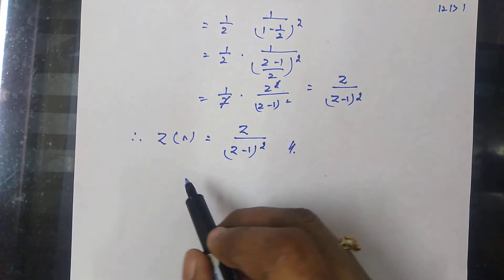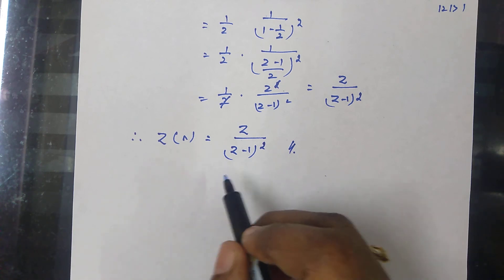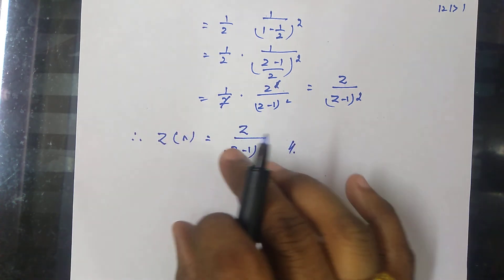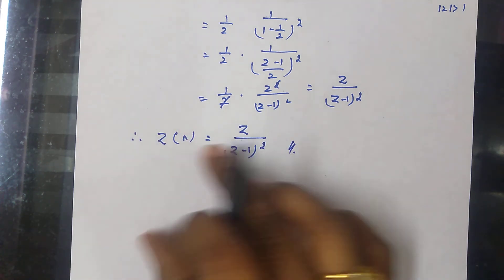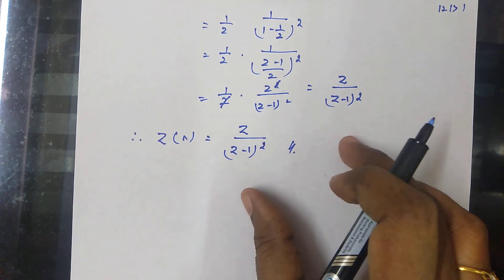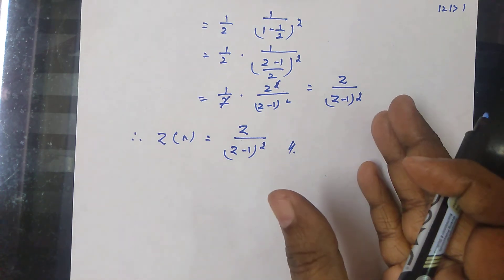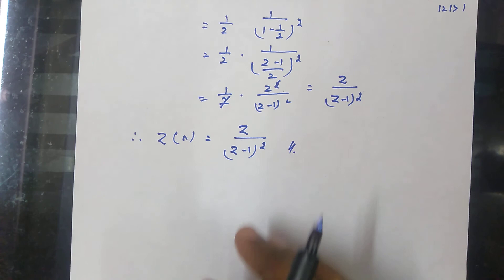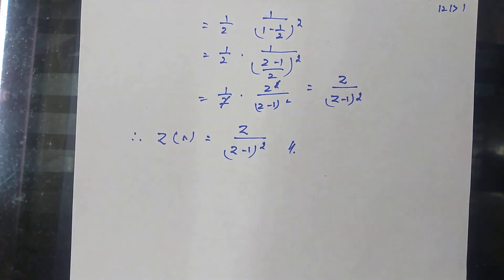So Z of n equals Z by Z minus 1 the whole squared — that is the answer for Z transform of n. These basic results, Z of 1 and Z of n, will appear as part of larger problems, so we must remember them. Thank you for watching.